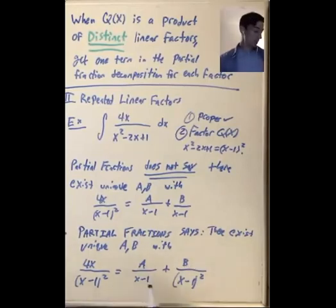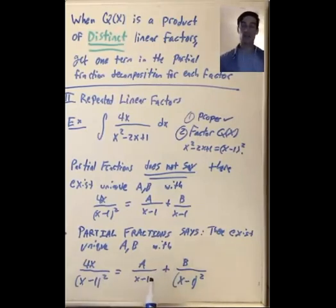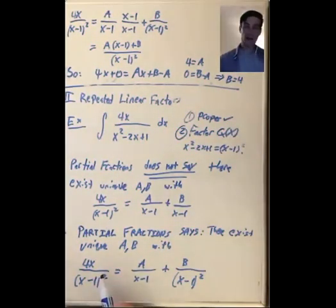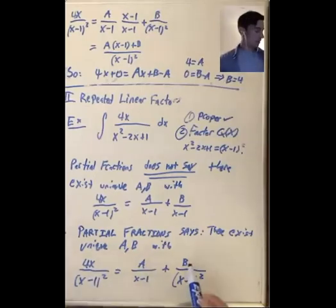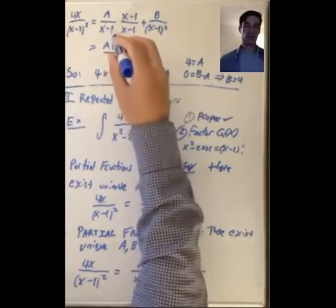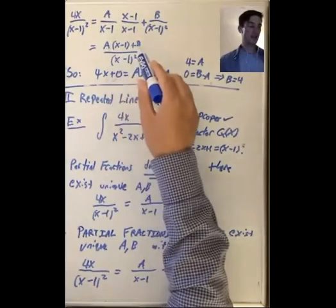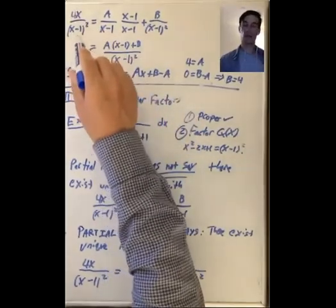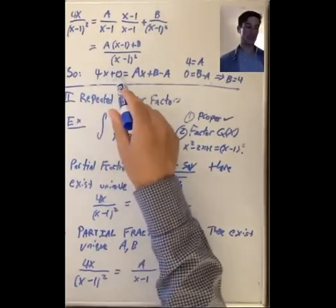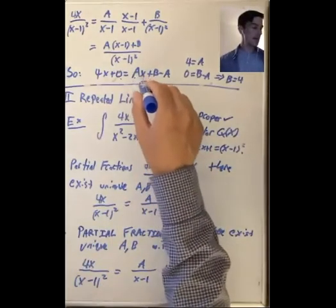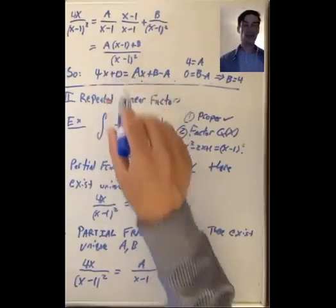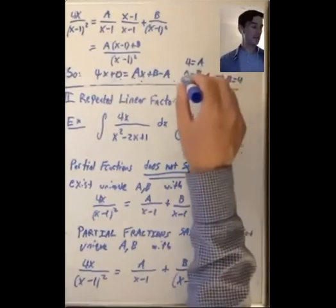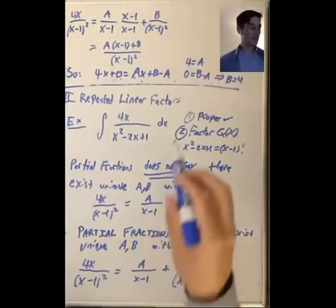Our goal is to find the unique a and b that makes 4x over x minus 1 squared equal to a over x minus 1 plus b over x minus 1 squared. Putting everything over a common denominator gives a times x minus 1 plus b over x minus 1 squared equals 4x over x minus 1 squared. So 4x plus 0 equals ax plus b minus a. The x parts must be equal and the constant parts must be equal, so a equals 4 and 0 equals b minus a, meaning b equals a equals 4.